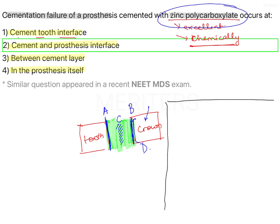The mixing time of zinc polycarboxylate is very, very short — it is ready in 30 to 40 seconds, and it sets in 7 to 9 minutes. The mixing and working time is very critical; it sets very quickly, so be very careful with zinc polycarboxylate.